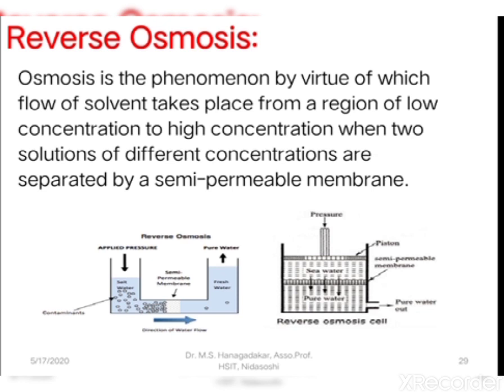In the reverse osmosis cell diagram shown here, the cell has two compartments. The bottom compartment is for the pure water side and the top compartment is for the sea water side, with a semi-piston where pressure can be applied on the sea water side. Both sea water and pure water are separated by the semi-permeable membrane. When pressure greater than the osmotic pressure is applied on the sea water side, water molecules from the sea water side pass through the semi-permeable membrane to the pure water side, and pure water can be drained out from the bottom of the compartment.